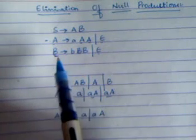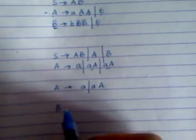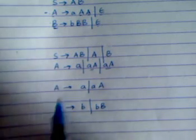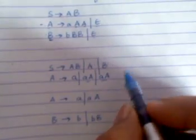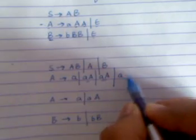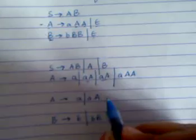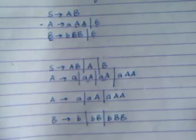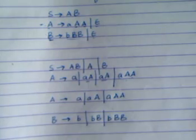Now let us consider B. B gives b and BB. We should not forget to include the original productions as well. By applying the nullable combinations, B gives b or BB or B — nullifying one of the B's in BB. The actual productions are retained and the others are derived by nullifying the nullable variables.